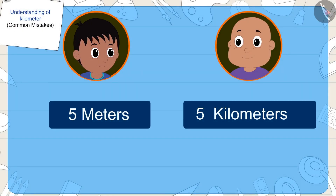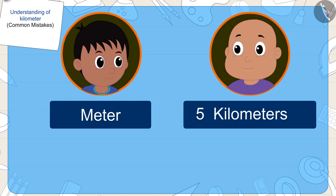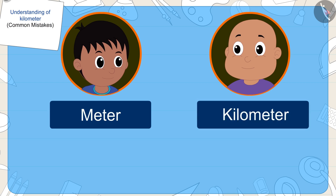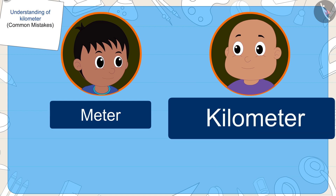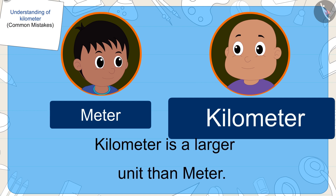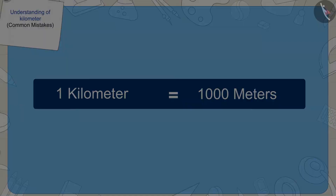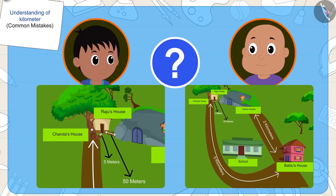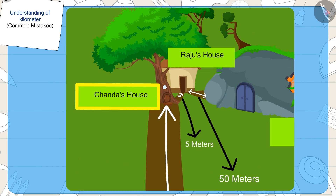Even though the numbers in Raju and Bablu's distances are the same — both five — the unit for Raju's house is meters and the unit for Bablu's house is kilometers. Kids, you know which unit is bigger: one kilometer equals one thousand meters. So Raju's argument is correct — his house is closer to Chanda's house.